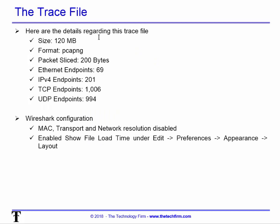Here are the details of the trace file I'm using: it's a 120 megabyte trace file in Wireshark's native format, PCAP-NG. It uses a 200-byte sliced packet, capturing the first 200 bytes of each packet. There are 69 Ethernet endpoints or MAC addresses, 201 IPv4 addresses, 1006 TCP endpoints or ports, and 994 UDP endpoints — a good size trace file.